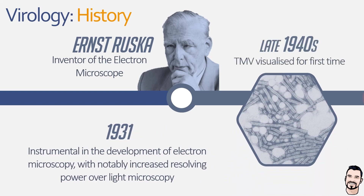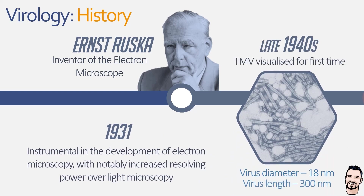If we fast forward to the late 1940s, the virus causing tobacco mosaic disease — the tobacco mosaic virus — was visualized for the very first time, showing that it was an order of magnitude smaller than the average bacterial cell that had been identified up to this point.